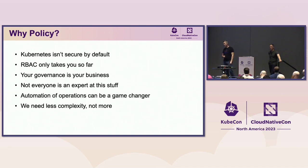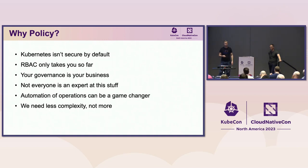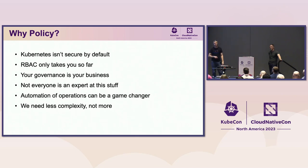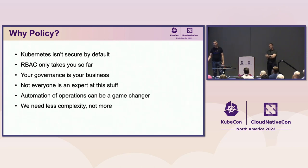Your governance is your business. Kubernetes is just an engine — it has tools available, but ultimately what you need for your environment and your organizations, that's your governance structure. Not everyone is an expert at this; Kubernetes is hard. It's also about creating guardrails that help people do things they should do, not because they have malicious intent, but because sometimes we forget and we need a little bit of help. Automation of operations can be a game changer. Policy can help us reduce complexity, consolidating workloads and tools into one.